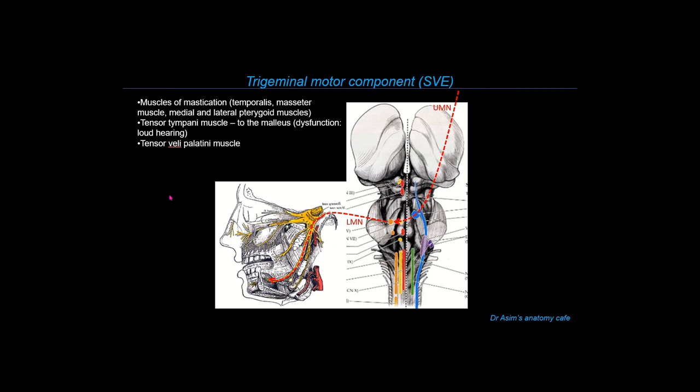Another muscle innervated by the trigeminal motor nerve is the tensor veli palatini, a tiny muscle responsible for elevation of the palate. Other muscles innervated by the trigeminal motor nucleus include the mylohyoid and the anterior belly of the digastric muscle, which are muscles contributing to the muscular floor of the oral cavity.